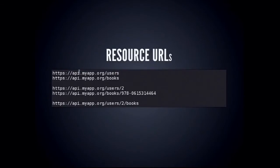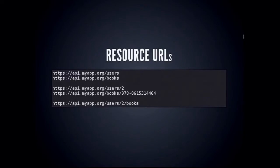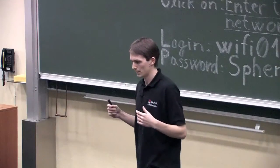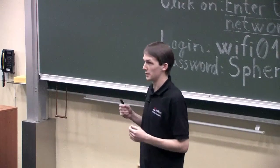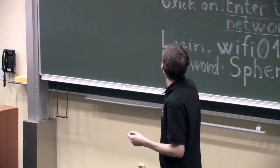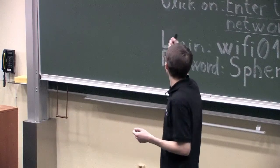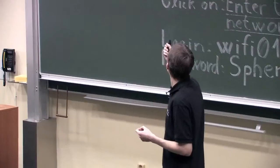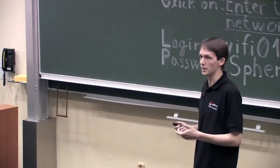Here are some examples of resource URLs. The first two are collection URLs — users of my application, books in my application. The next two are element URLs — a particular user and a particular book. The third group shows that collections and elements can be nested: a users collection, a particular user within that collection, and then a collection of books that user has read or owns.